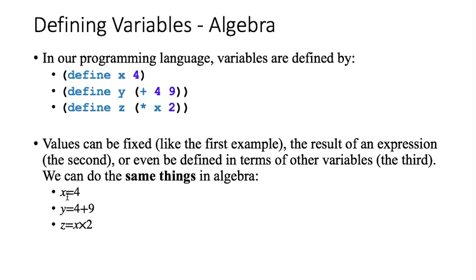And we can do the same things in algebra. We just say x equals 4. In algebra notation, in mathematical notation, equals is an assignment operator assigned to a variable. So x equals 4 means that x is going to be assigned the value of 4. In this one, the variable y is assigned the value of 4 plus 9. And in this one, the variable z is assigned the value of the variable x times 2.